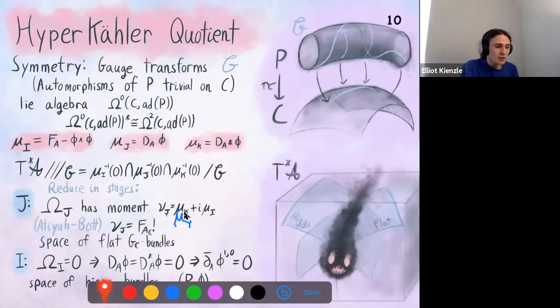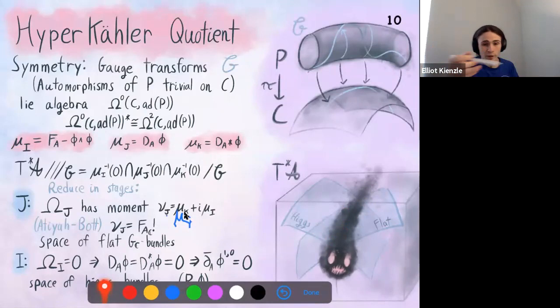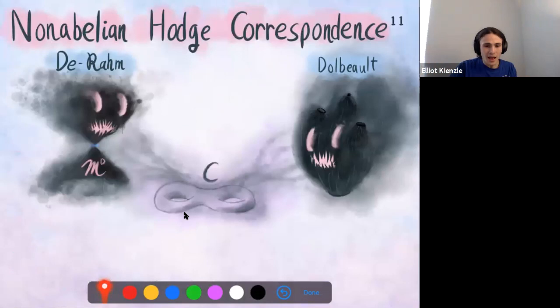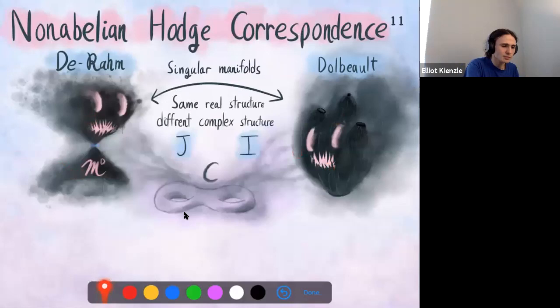We can see what's going on in this picture. We have our total cotangent space of connections, with two different ways of reducing the system. One gives the space of Higgs bundles; the other gives the space of flat connections. They intersect exactly in the solutions of all three equations — exactly in the solutions of Hitchin's equations. After modding by gauge transforms, we get our Higgs moduli space again, in a different form. So we have the same moduli space of Higgs bundles over the same curve but looked at from two different perspectives, giving two different complex structures.